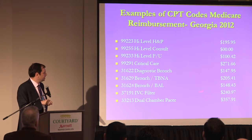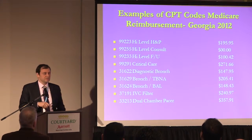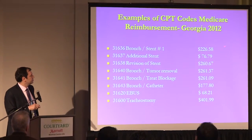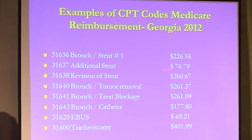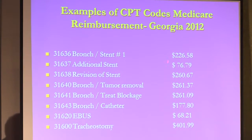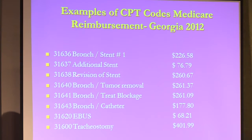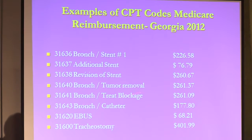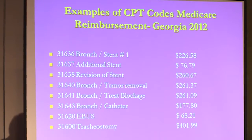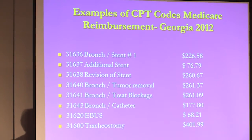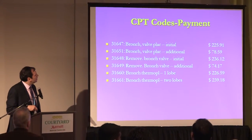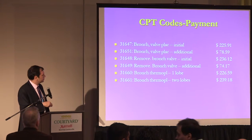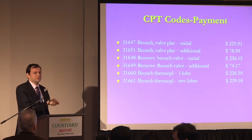For contrast: an IVC filter is $240 and a pacemaker about $357. For stent, one stent gets you $226, with an additional stent about $76. Revision of stent pays more, recognizing potential complexity — especially with metallic stents. Tumor removal and mechanical excision, laser ablation at 31641, and EBUS as an add-on at about $70. Tracheostomy remains the highest-reimbursed procedure in our practice — about $400 from Medicare. Thermoplasty is in the same range as stent placement.